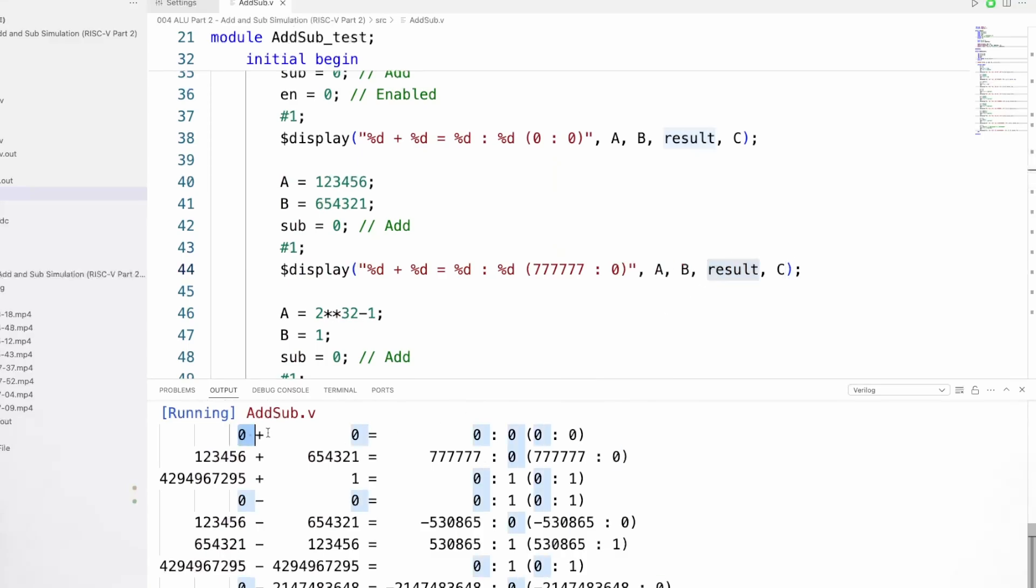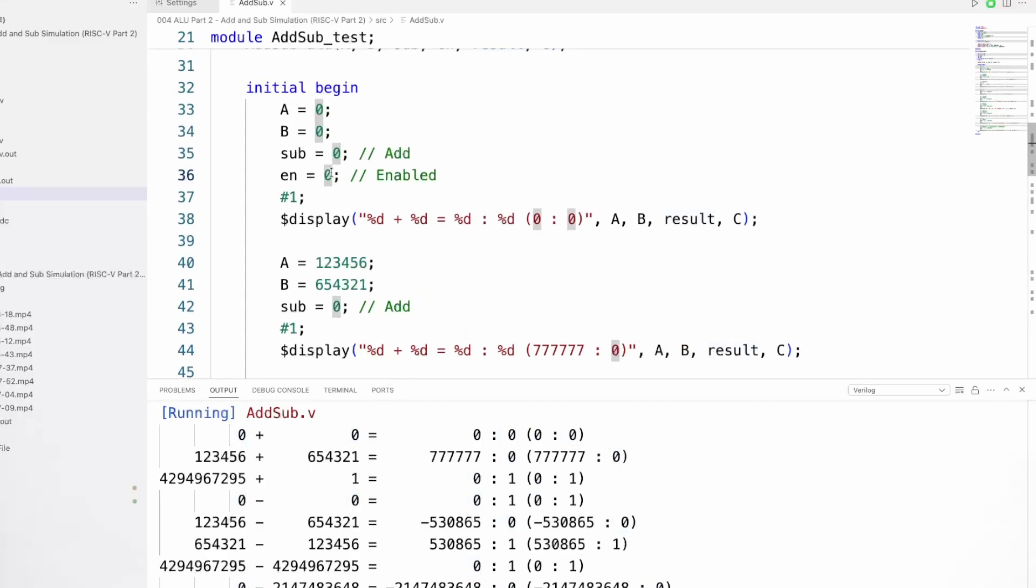So let's just test again with a disabled output. And we can see that we have ZEDS down here. So our Verilog module is working. We've updated the schematic. The last thing now to do is to prepare the PCB and get that ordered.